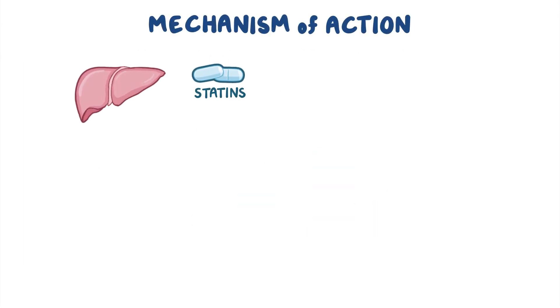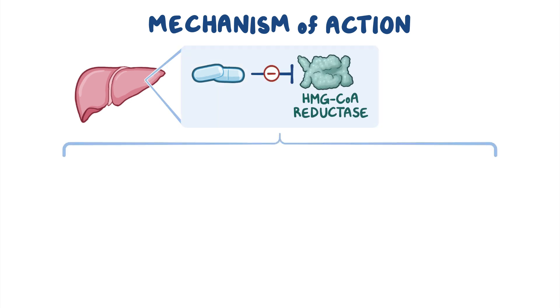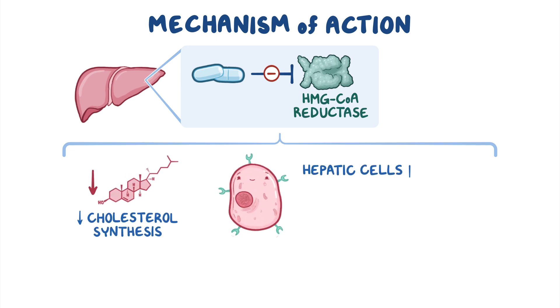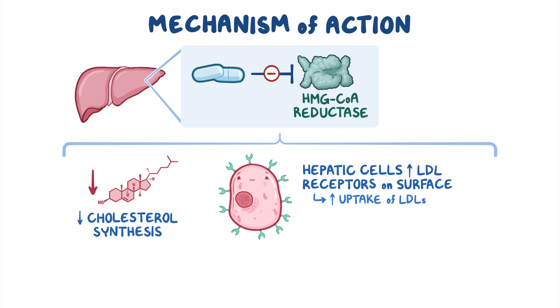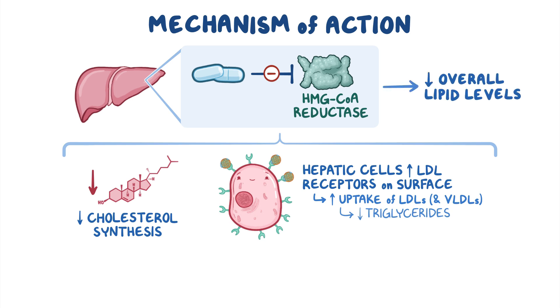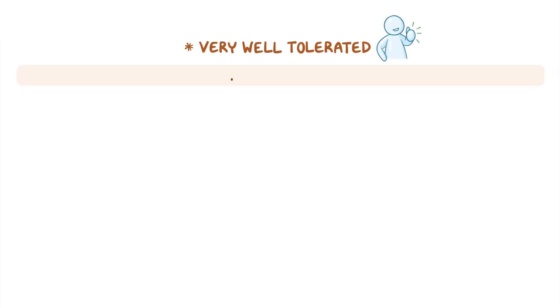Once absorbed into the bloodstream, statins travel to the liver where they inhibit the enzyme HMG-CoA reductase. As a result, there is a decrease in cholesterol synthesis. This also causes hepatic cells to increase the number of LDL receptors on their surface, facilitating the uptake of cholesterol-rich LDLs and VLDLs to a smaller degree, which provides a moderate decrease in triglyceride levels. Ultimately, statins help lower overall lipid levels.